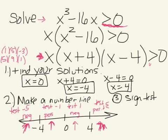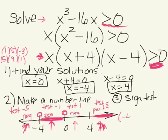The problem asks where the expression is greater than zero, meaning we want the positive regions. We have positive values between -4 and 0, and positive values to the right of 4. Since the inequality is strictly greater than zero (not equal), we use open circles at -4, 0, and 4. So the solution is the interval (-4, 0) union (4, +∞).